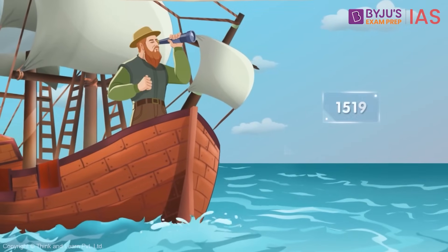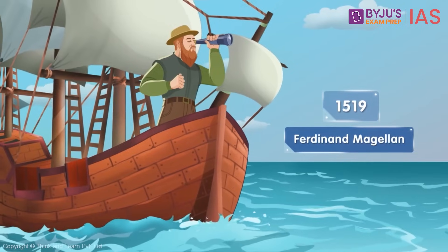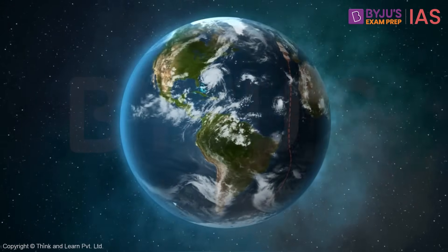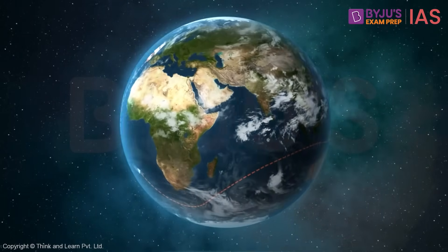In 1519, Ferdinand Magellan proved through his voyages that the Earth was indeed round. Magellan's circumnavigation around the globe proved beyond doubt that the Earth was indeed round.